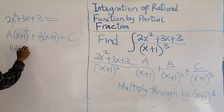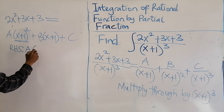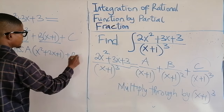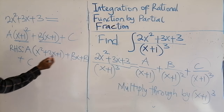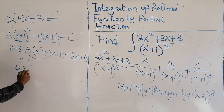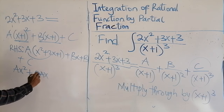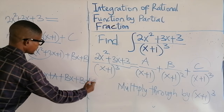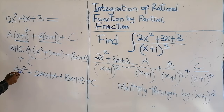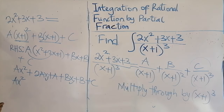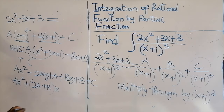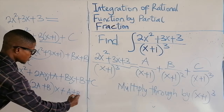Expanding the right-hand side: A times (x+1)² gives A(x² + 2x + 1), which expands to Ax² + 2Ax + A. Then plus Bx + B, then plus C. Arranging by powers of x, we get: Ax² plus (2A + B)x plus (A + B + C).